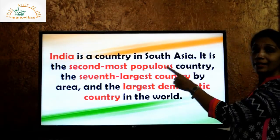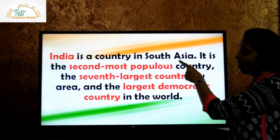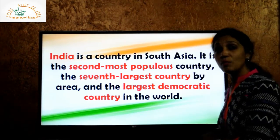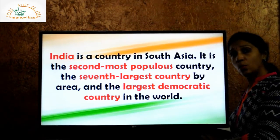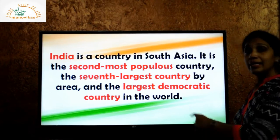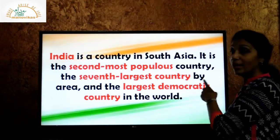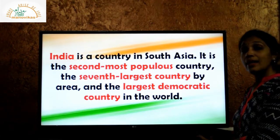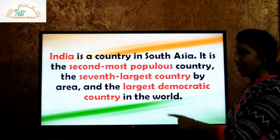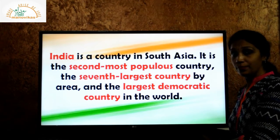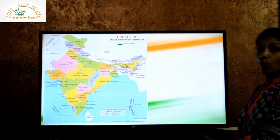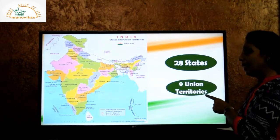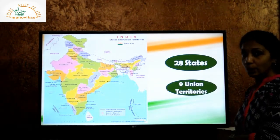India is a country which is located in South Asia. It is the second most populated country in the world, the seventh largest country by area, and the largest democratic country in the world. India is divided into 28 states and 9 union territories.